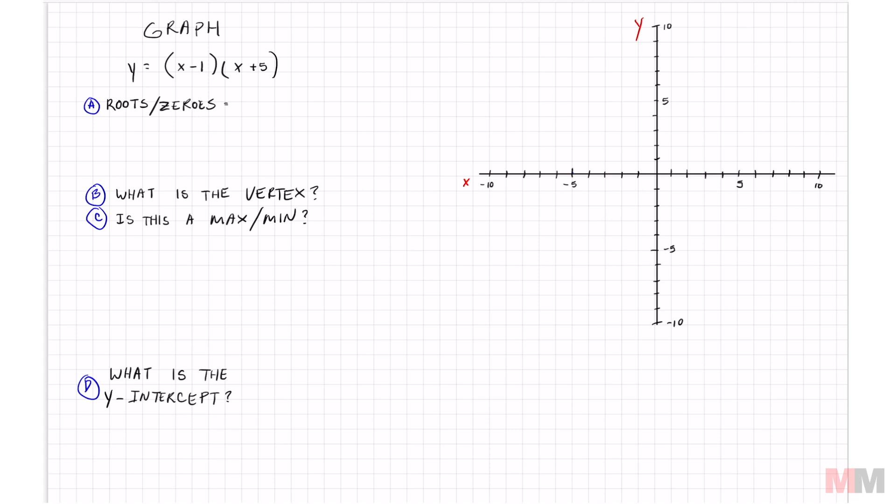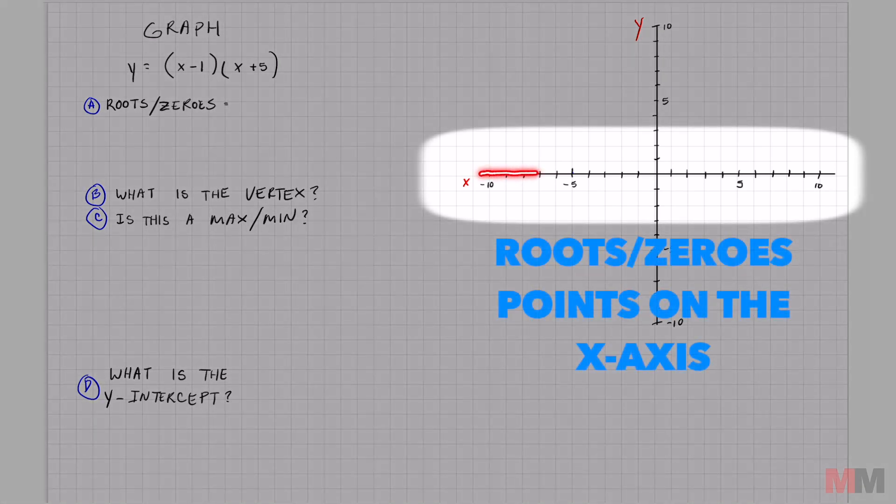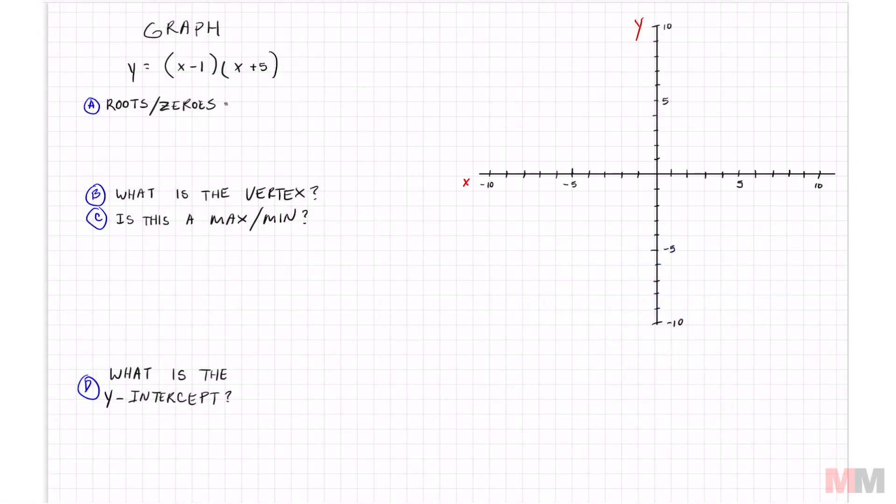Let's start off with A, finding the roots and zeros. First of all, what the heck are those, right? Roots and zeros are points on the x-axis when you graph quadratic equations. And to get that, it's really easy. Let's call this red and let's call this one blue. If it is in a factored form or they're in parentheses like that, all you got to do is take each factor or each parentheses and set it equal to zero.